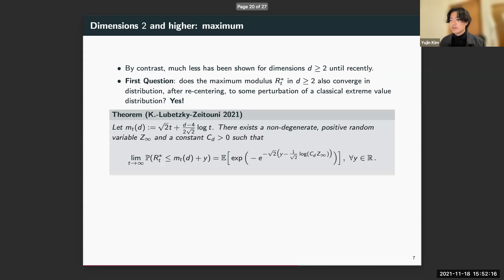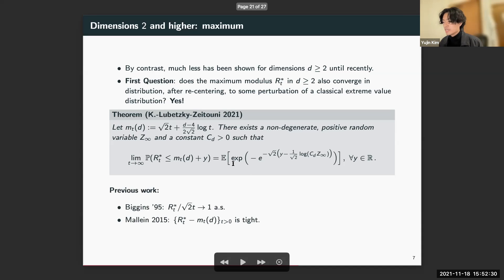The answer to all these turns out to be yes, and this is the main result of the recent work of myself, Al, and Ofer. Again, we see a centering that's like √(2t) plus a dimensional constant times log as the second order. The limiting law turns out to be a randomly shifted Gumbel, so again e^(-e^(-something)), and the shift is coming from this random variable which we call Z_∞. Z_∞ is the analog of the derivative martingale in d dimensions, though with some important distinctions.